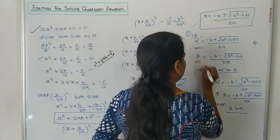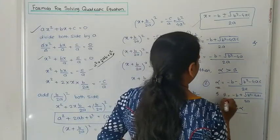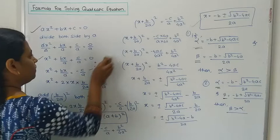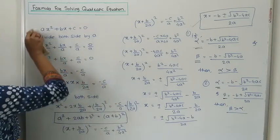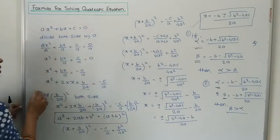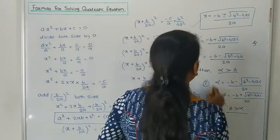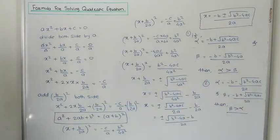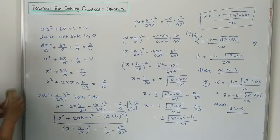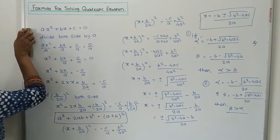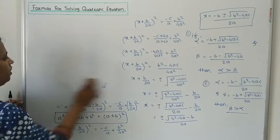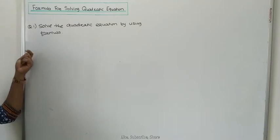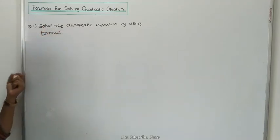Then we discussed two possibilities for alpha and beta. Now, next, we have to solve some examples based on solving the quadratic equation using the formula. We have to discuss some examples — solve the quadratic equation by using the formula.